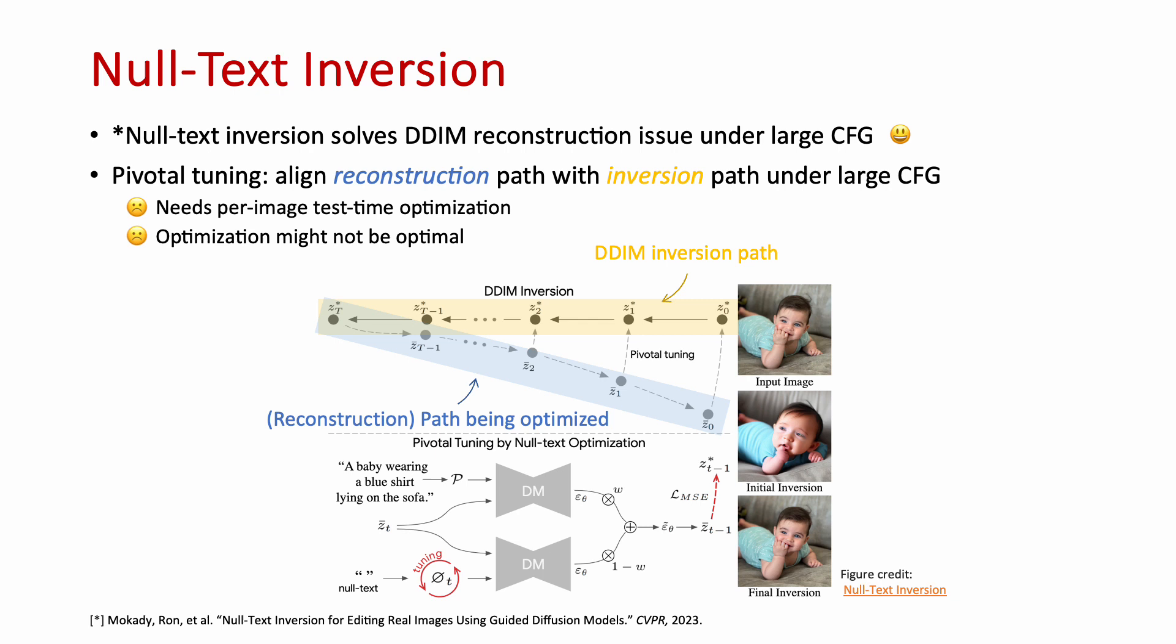Here's a brief recap of null-text inversion. It employs the pivotal tuning of the null-text embedding, such that the reconstruction path shown in blue tracks the inversion path shown in yellow. It shows great editing results, but one drawback is that it still requires per-image test-time optimization. Also, the optimization might not be optimal.